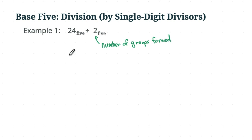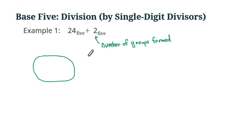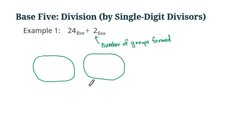We can start doing that already, so let's make two groups. That's one group — we are going to put pieces inside the group. Now we have two groups, and we also need to put down the pieces for the dividend.